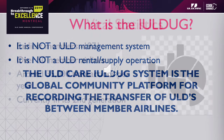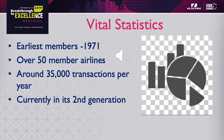Some vital statistics: the IULD UG system has its earliest members dating back to 1971 — so almost 50 years — and has over 50 member airlines. It processes around 35,000 transactions per year, which equates to about 17,500 interlines, because there's a transaction in and a transaction back out. And it's currently in its second generation as far as the actual processing of transactions from a technical point of view.